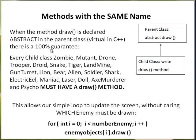This allows our simple loop to update the screen without caring which enemy must be drawn. For i equals zero to the number of enemies, I go to the array and ask each enemy object to draw itself on the screen. An abstract or virtual method is declared in the parent class and forces the child class to implement the method draw. You want each object to be responsible for themselves — each handles their own moves, weapon fire, and must draw themselves. A zombie object will draw a zombie on the screen; a mutant object will draw a mutant.